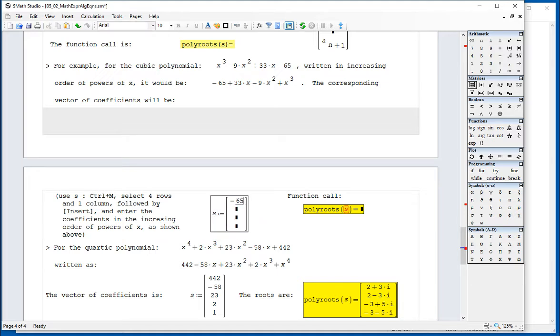And then we start typing in the numbers there. Negative 65, and what we need to do is the right arrow key. And the second element is 33. The third one is negative 9. The fourth one is 1.